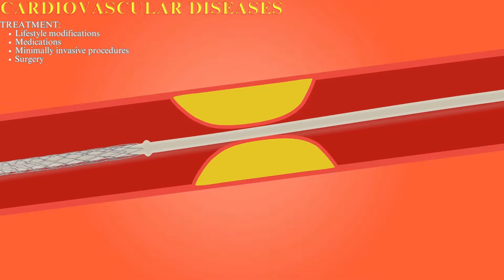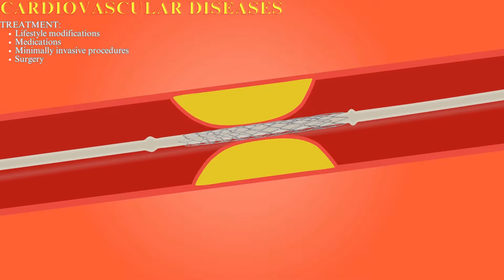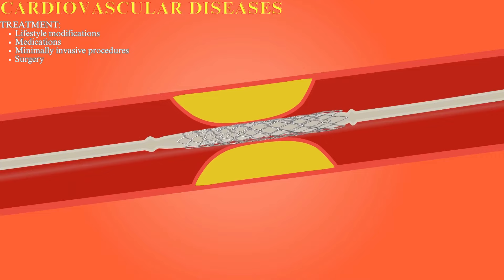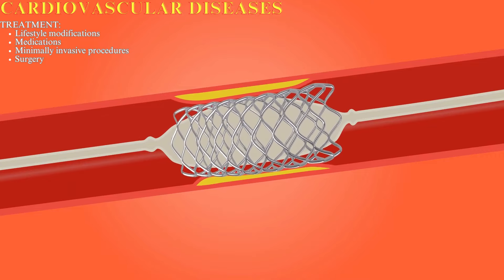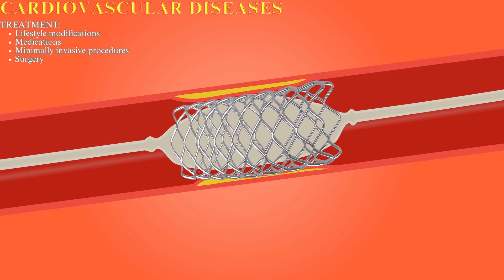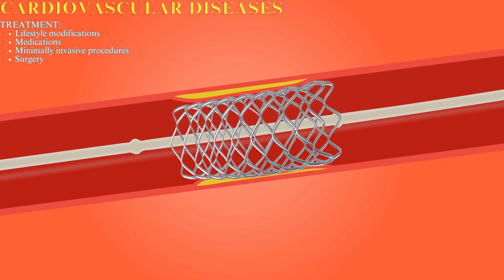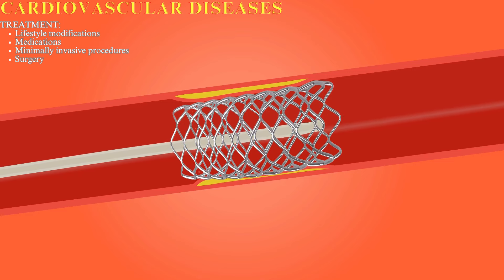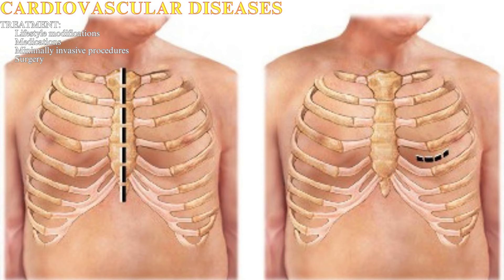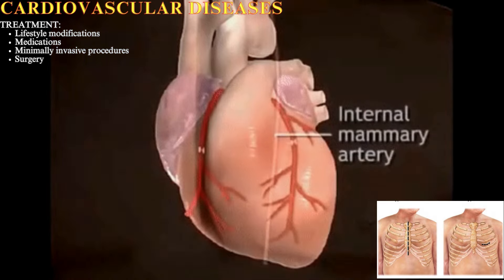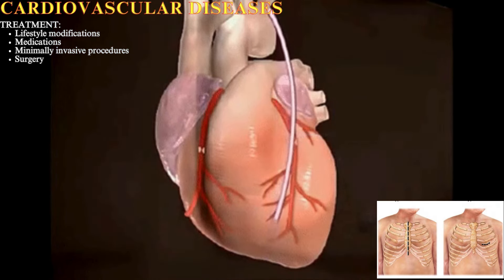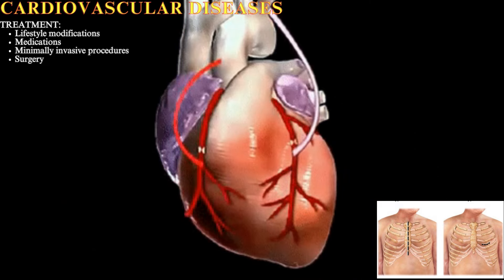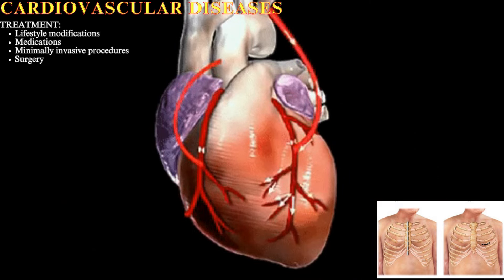Minimally invasive techniques like angioplasty and stenting can open blocked arteries without major surgery. During angioplasty, a balloon is inflated to widen the artery, and a stent — a tiny mesh tube — may be inserted to keep it open. Bypass surgery may be necessary to reroute blood flow around blocked arteries in the heart. Valve replacement surgery repairs damaged heart valves to restore proper function.